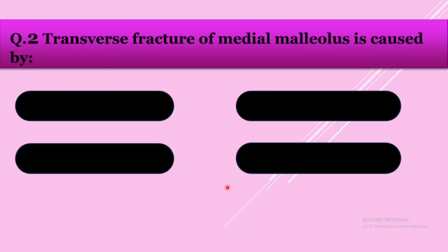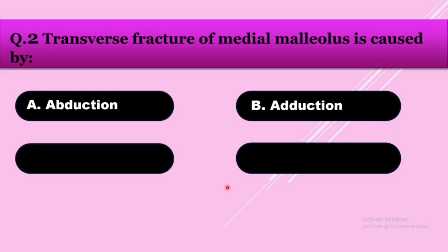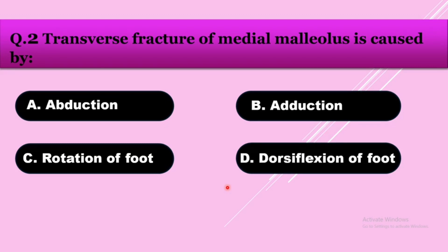Question number two: Transverse fracture of medial malleolus is caused by — option A: abduction, option B: adduction, option C: rotation of foot, option D: dorsiflexion of foot. The answer is abduction. The mode of injury for medial malleolus fracture is abduction.